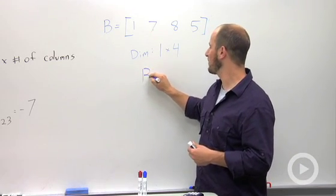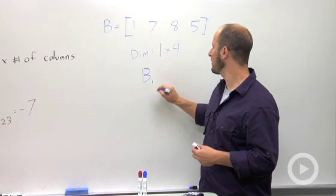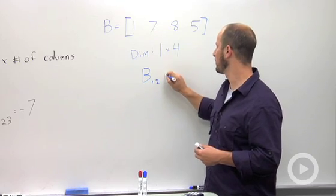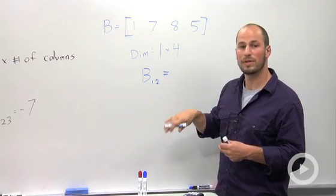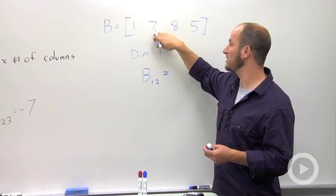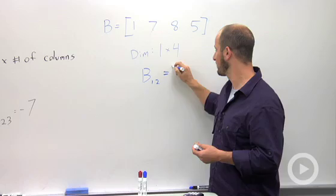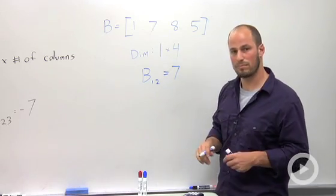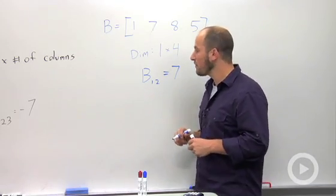See if we can get a little bit more information. Say we say B one two - the first row, it's the only row we have, and the second column, which is relating to the number seven.